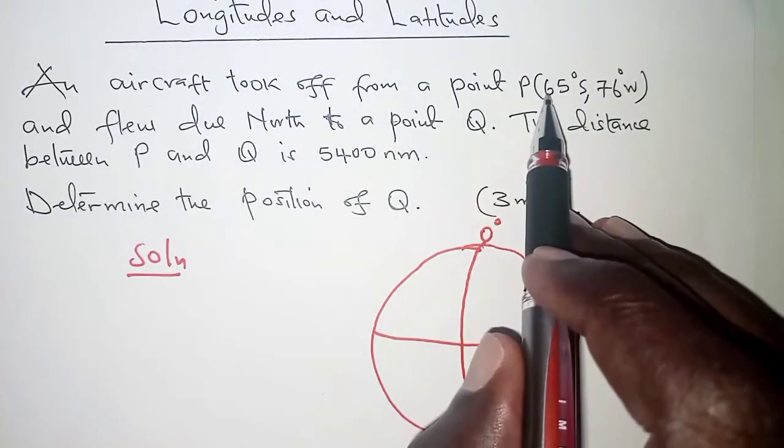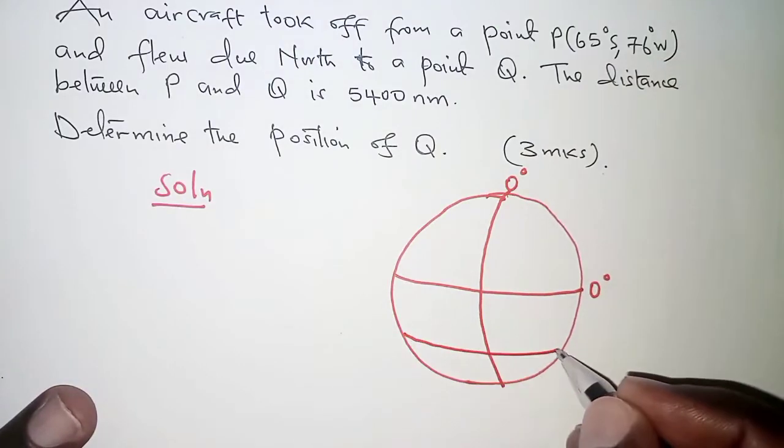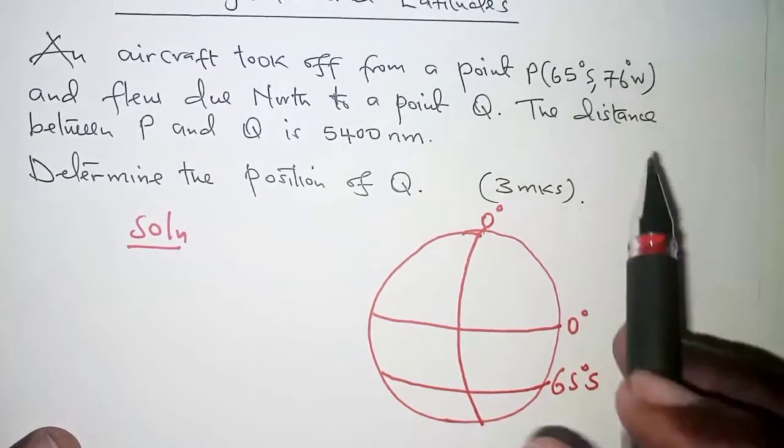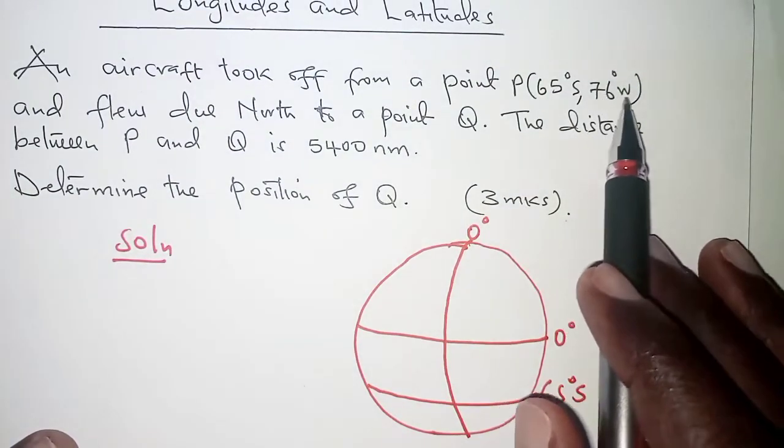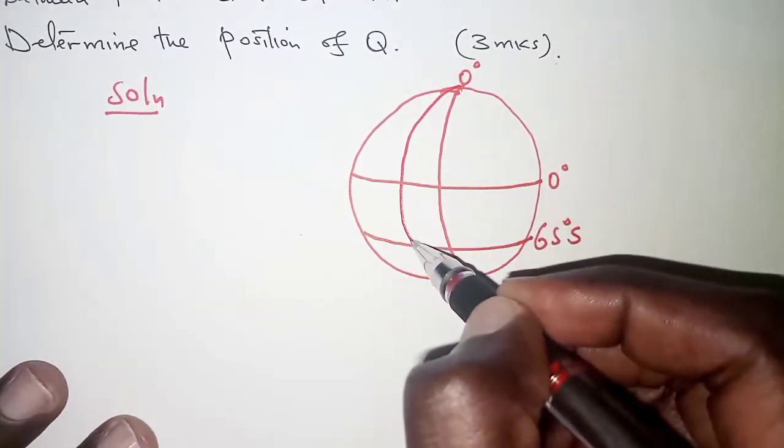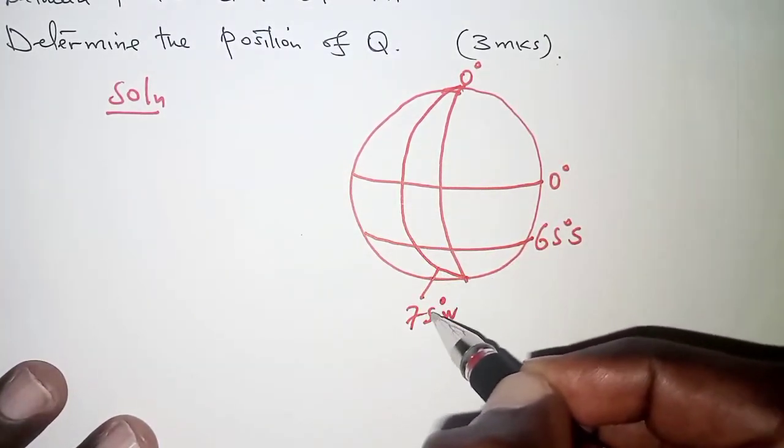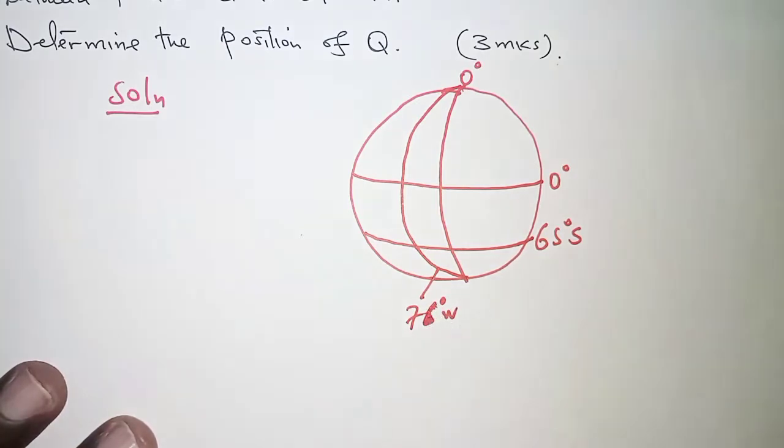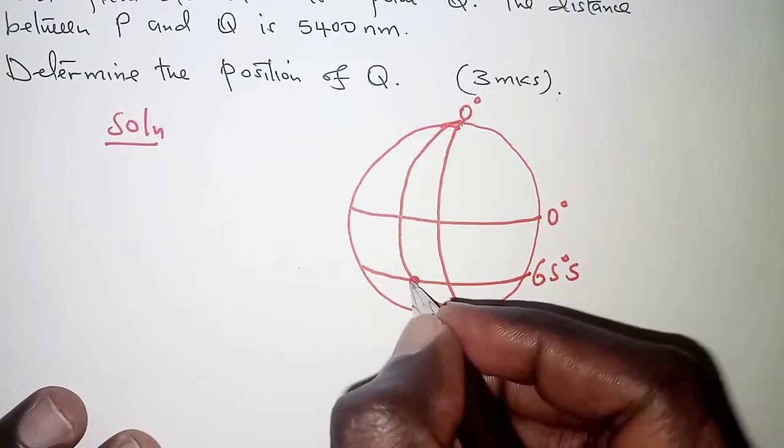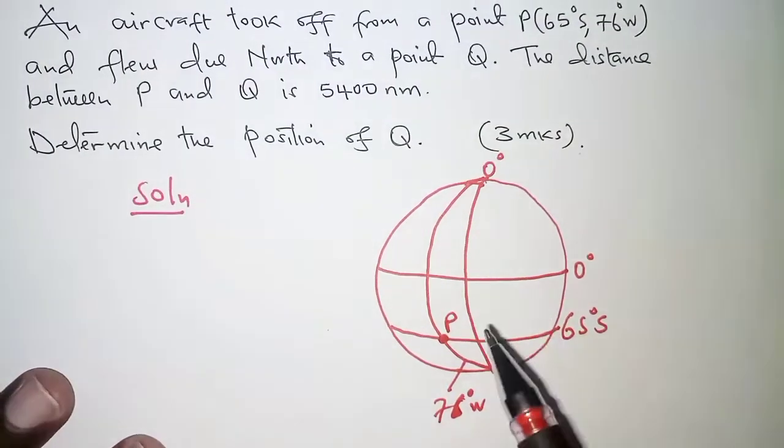P lies on latitude 65 degrees south, that is to the south of equator and then 76 degrees west, that is west of the prime meridian. So 76 degrees west, where the two meet, that is where we will have point P.